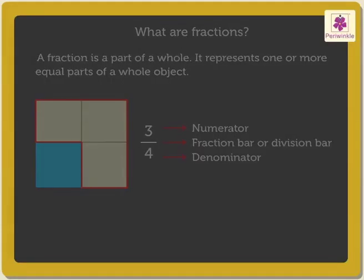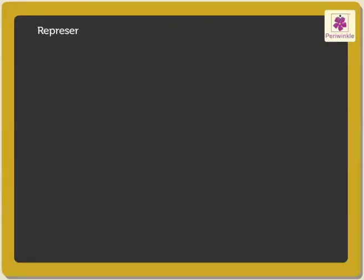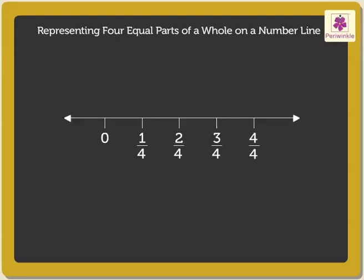Now, let us see how four equal parts of a whole are represented on a number line. Here, zero to one-fourth is one part of the whole. One-fourth to two-fourths is the second part of the whole. Similarly, two-fourths to three-fourths is the third part.